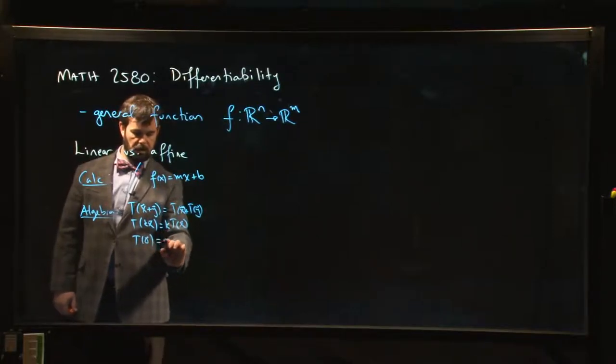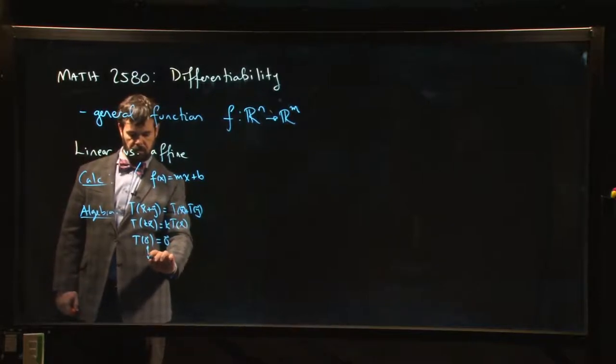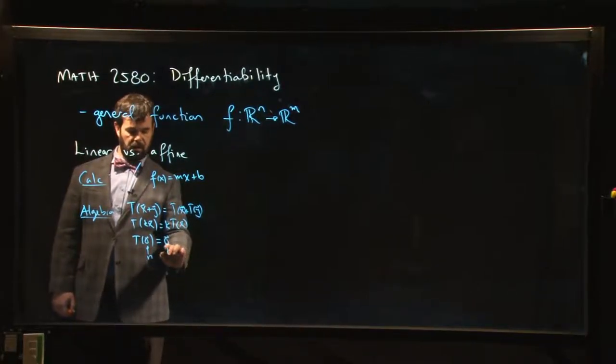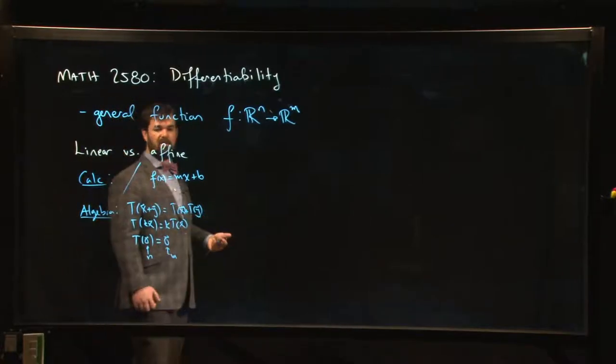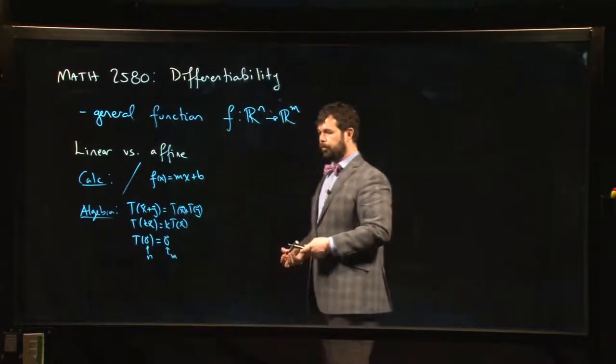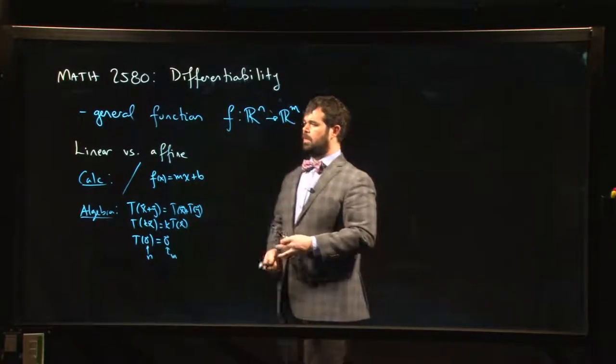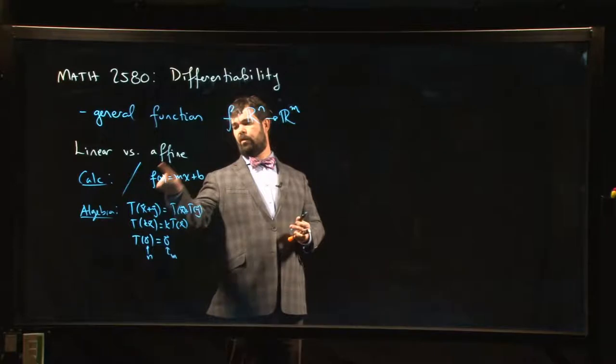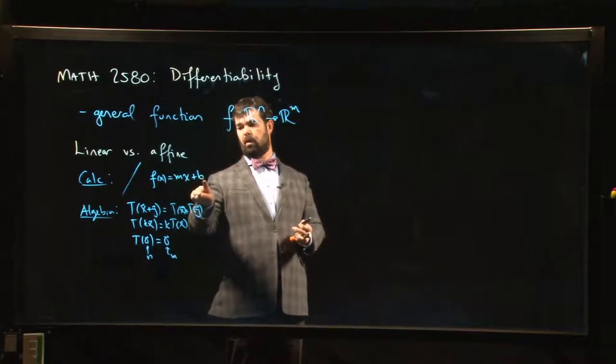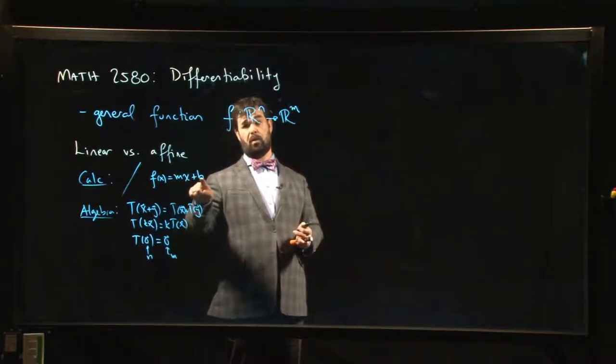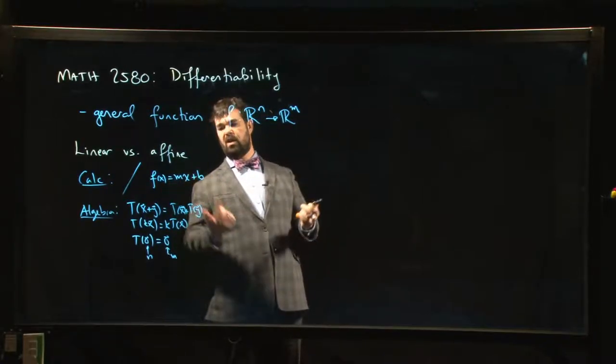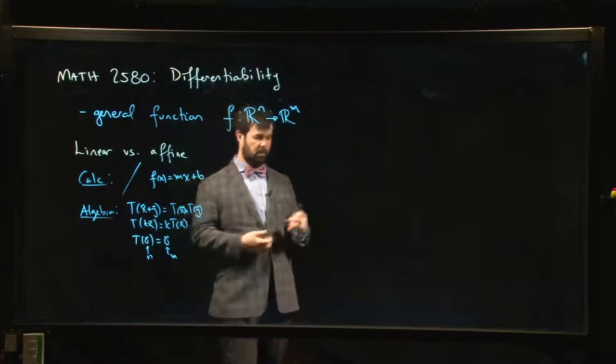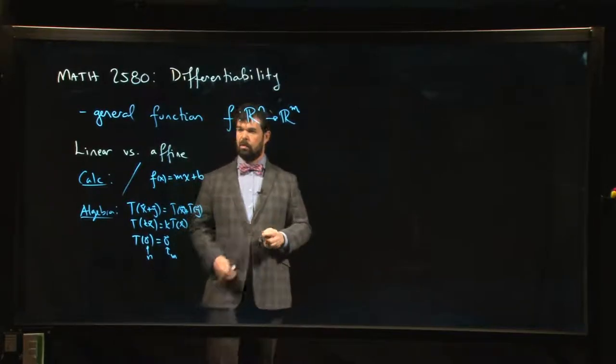In particular, one consequence if you set k equal to 0 in this property is that T has to take the 0 vector (the n-dimensional zero vector) to the m-dimensional zero vector. So T(0) has to be 0. Of course that doesn't happen for something like this unless b equals 0.